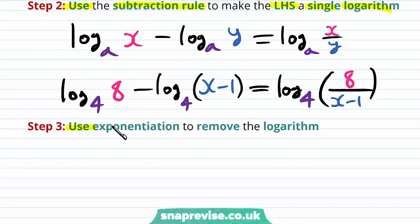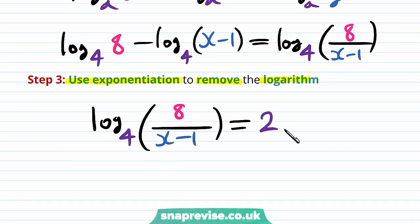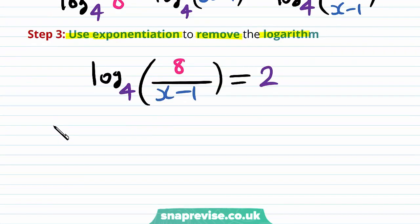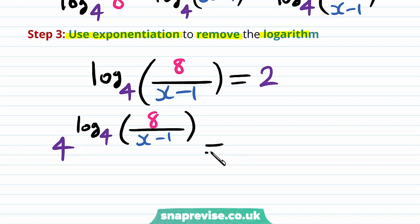Our third step is to use exponentiation to remove the logarithm. Our new equation is the log base 4 of 8 over x minus 1 is equal to 2, because all we've done is to manipulate the left hand side. And therefore, we can take 4 to the power of both sides to get 4 to the power of log base 4 of 8 over x minus 1, and then our right hand side will be 4 to the power of 2.